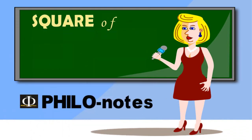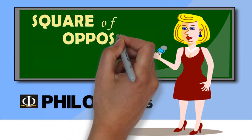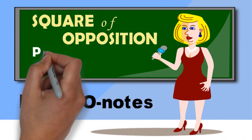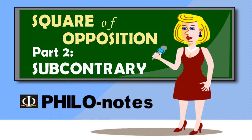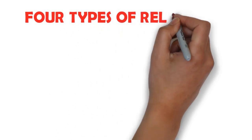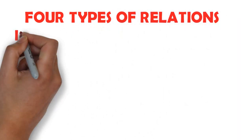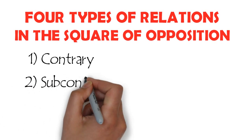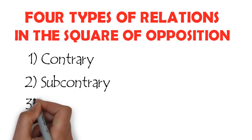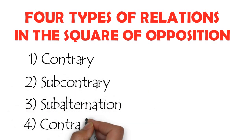Today's whiteboard is a continuation of our discussion on the four types of relation in the square of opposition. The four types of relations in the square of opposition are contrary, subcontrary, subalternation, and contradiction.